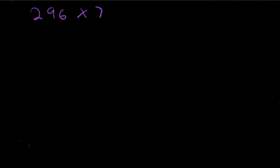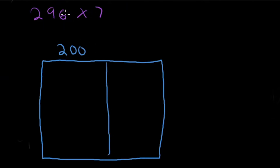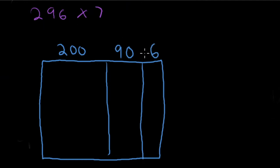The area model is what we've been using, and I'm going to continue to use that. I'll draw my area model — a lot of people call it a window, some call it a square or rectangle, whatever you want. We're going to break apart 296: I've got 200, I've got 90, and I've got 6 ones. I put a small addition symbol because 200 plus 90 plus 6 gives me 296. Our other number is 7, so I put a 7 on the side.